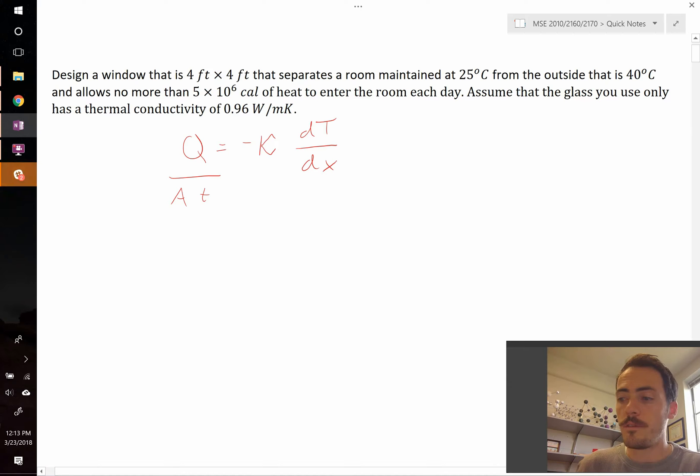So let's go ahead and start putting in values of things that we know. First off you'll notice that for this type of equation to work we have to get our units correct. For example, the total heat that we're allowed to enter the room is in calories, but if you look at our thermal conductivity that's given in watts per meter Kelvin. Watts is joules per second, so we should probably convert from calories to joules.